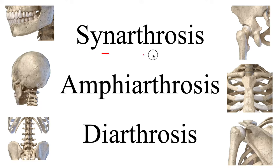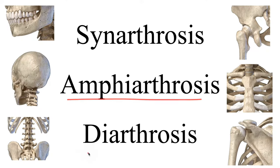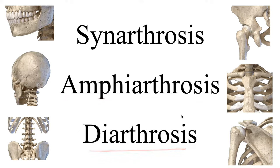Today we're going to cover synarthrosis, amphiarthrosis, and diarthrosis joints. These are the functional classifications of joints, meaning these are the words that signify the amount of movement a particular joint has. This is what we will cover today, so let's go ahead and dive into this material.